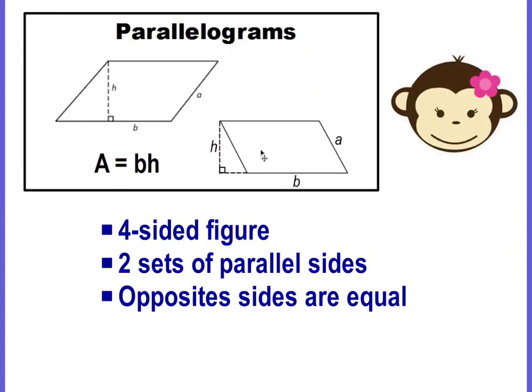We keep the same formula to find the area of a parallelogram. The formula is A = bh, area equals base times height. Go ahead and write down your characteristics of parallelograms. Just like a rectangle, it's a four-sided figure.